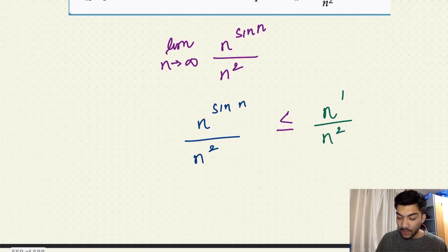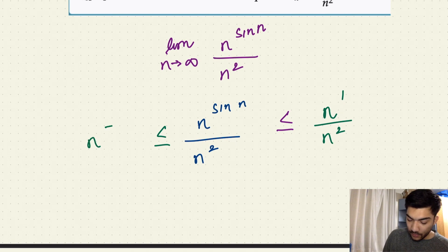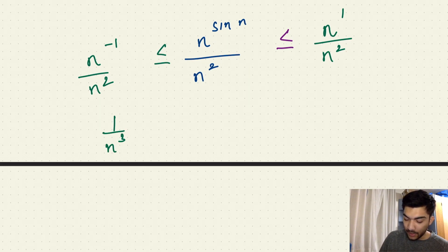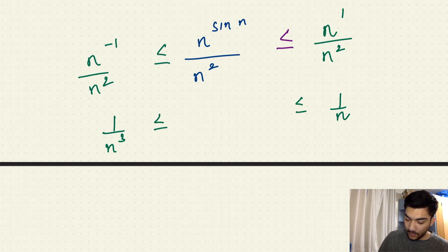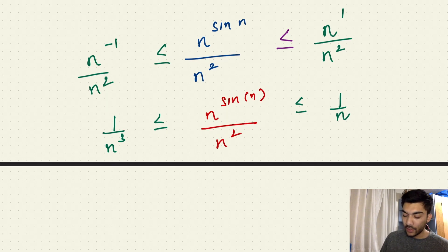Similarly, the minimum value of sine n is minus one, so this sequence is always greater than or equal to n to the power minus one, over n squared. Simplifying: the left-hand side is one over n cubed, the right-hand side is one over n, and in the middle we have our original sequence, n to the power sine n over n squared.